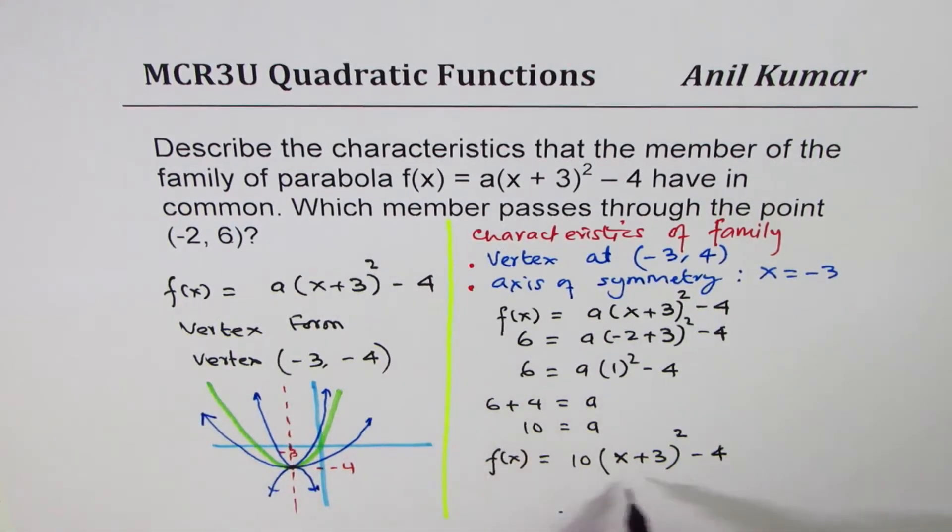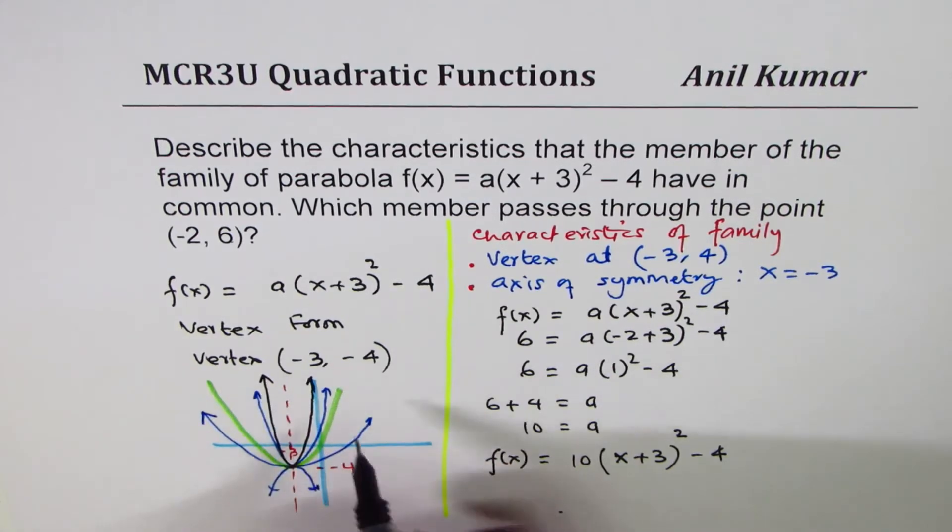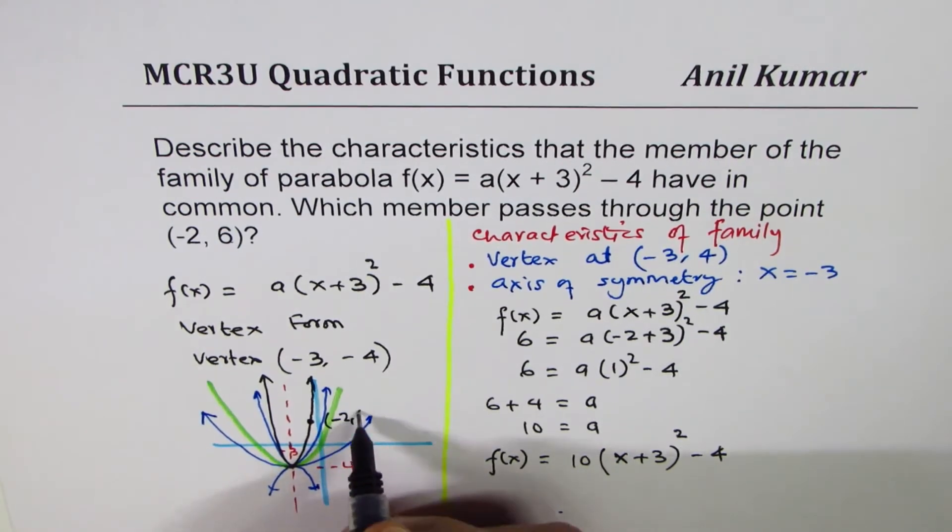So it's a vertically stretched function. So it could be kind of like this. It could be a function kind of like this, where at -2, the value is 6 for the function. So that point is what we are referring to as (-2, 6).